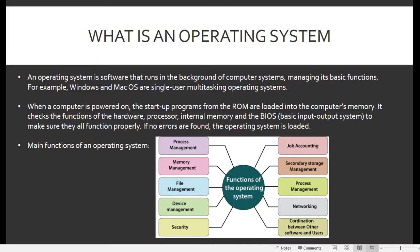What is an operating system? An operating system is software that runs in the background of computer systems, managing its basic functions. For example, Windows and Mac OS are single-user, multitasking operating systems.